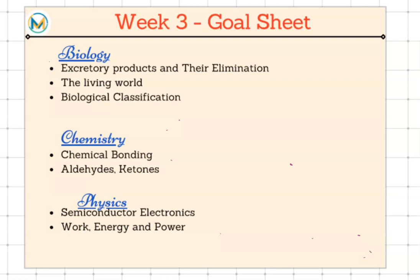Taking all this positivity along with us, let's check what's there in the third week. We have seven chapters allotted for this week. In bio we have excretory products and their elimination, living world, biological classification. We can expect around two to three questions from excretory products, and living world and biological classification collectively around four questions.